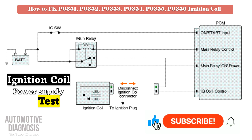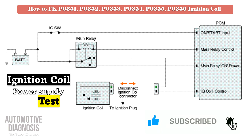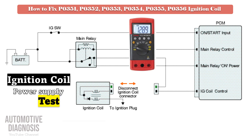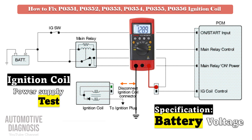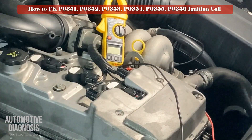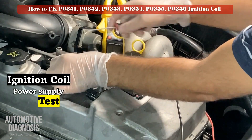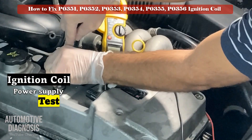The first step after checking the waveform is to disconnect the ignition coil connector, turn the ignition switch to the on position, and measure the supply voltage, which should be battery voltage. If there is no power on any of the ignition coils, check the ignition coil fuse, which is normally in the engine fuse box. Otherwise, check the wiring.